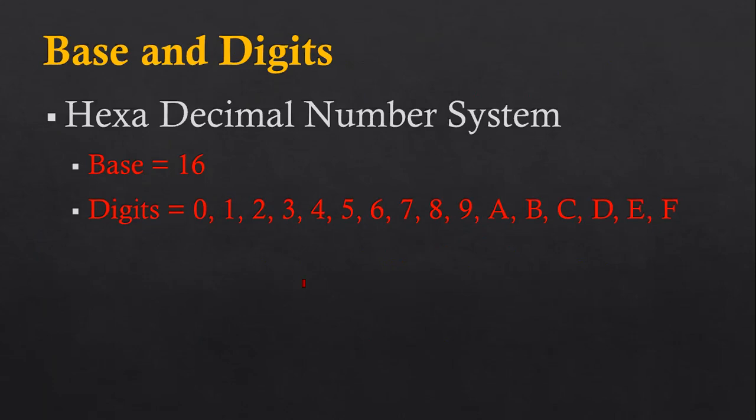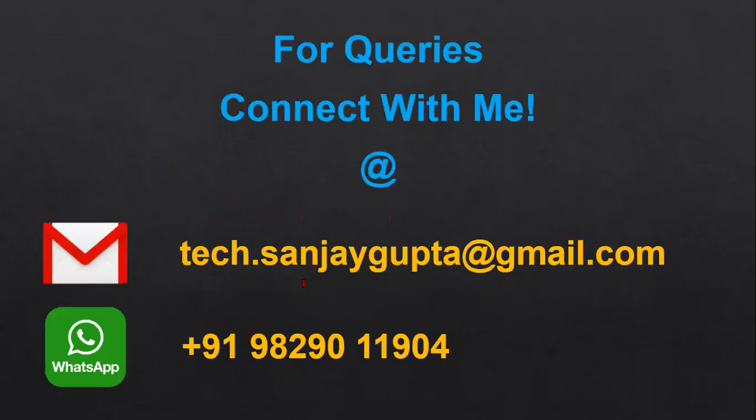This is all about the basics of number systems. We have four commonly used number systems: binary, octal, decimal, and hexadecimal. Each has two properties: base and digits. By counting the number of digits, we can easily identify the base. I hope you have learned about the types of number systems and their properties. If you have any queries, you can connect with me. Thank you.